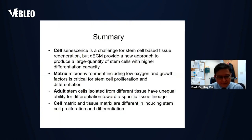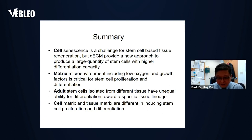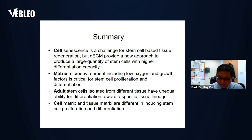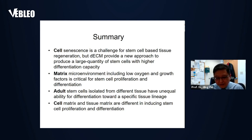Summary for the first section: Cell senescence is a challenge for stem cell-based tissue regeneration, but DECM can provide a new approach to produce a large quantity of stem cells with higher differentiation capacities. The matrix microenvironment — including low oxygen and growth factors — is critical for stem cell proliferation and differentiation. Adult stem cells isolated from different tissues have a unique ability for differentiation toward a specific tissue lineage, and cell matrix versus tissue matrix differs in inducing stem cell proliferation and differentiation.